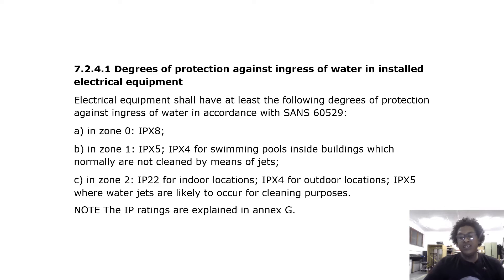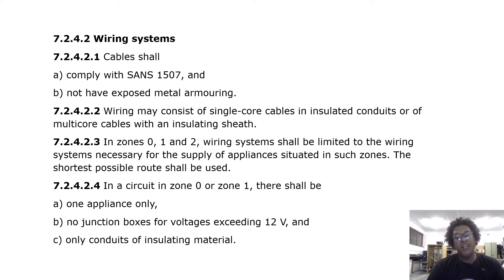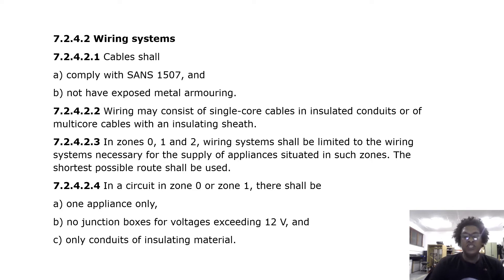Regarding wiring systems: cables shall comply with SANS 1507 and not have exposed metal armour. Wiring may consist of single core cables in insulated conduits or multi-core cables with an insulating sheath. In zones 0, 1 and 2, wiring systems shall be limited to those necessary for the supply of appliances situated inside such zones. The shortest possible route shall be used. In a circuit in zone 0 or zone 1 there shall be one appliance only, no junction boxes for voltages exceeding 12 volts, and only conduits of insulating material.